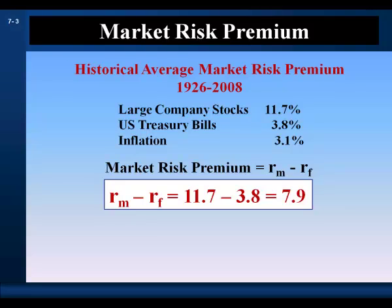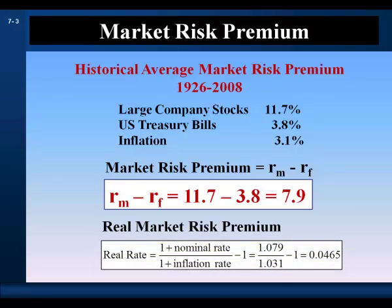As we use a portfolio of common stock to proxy for the market portfolio, this is also called an equity risk premium. We can use the average inflation rate of 3.1% and calculate a real market risk premium of 4.65%. This represents a 4.65% real increase in purchasing power.